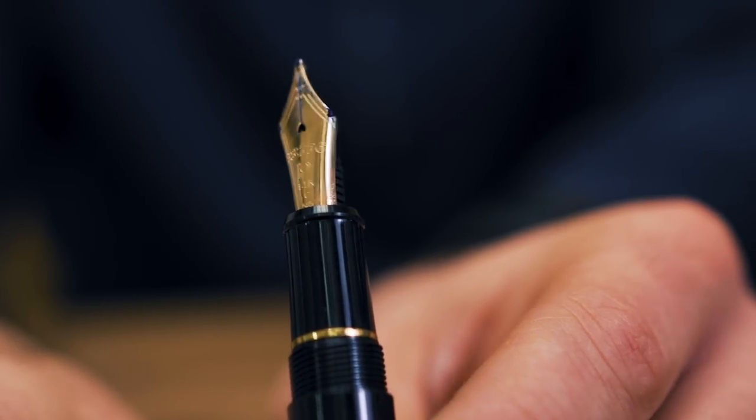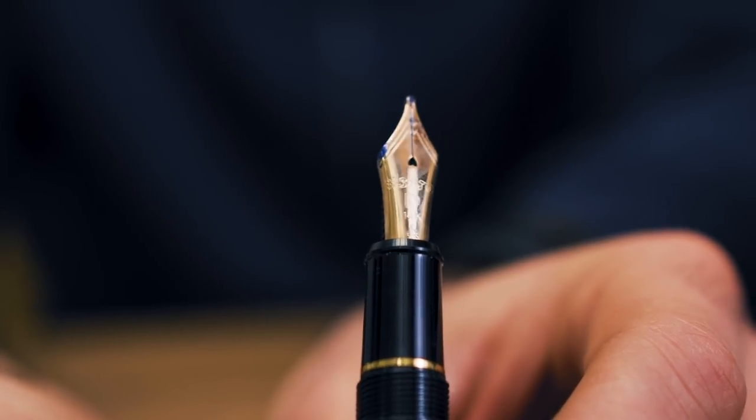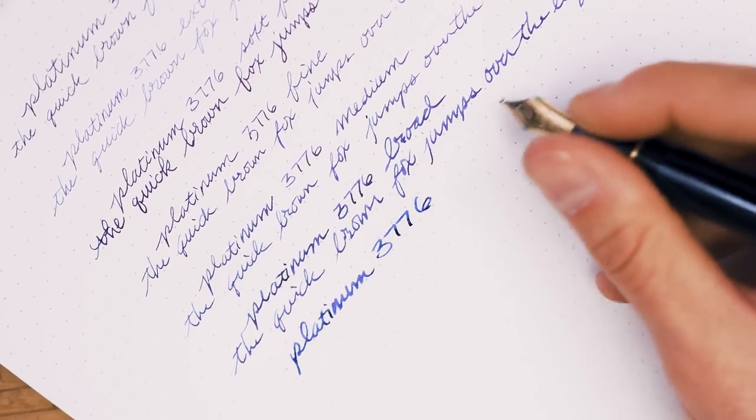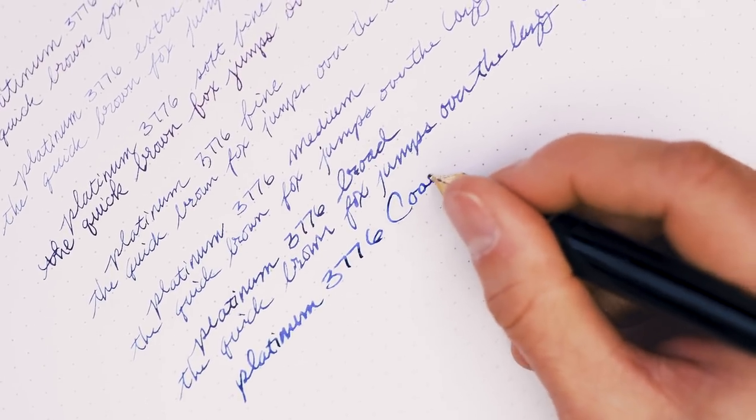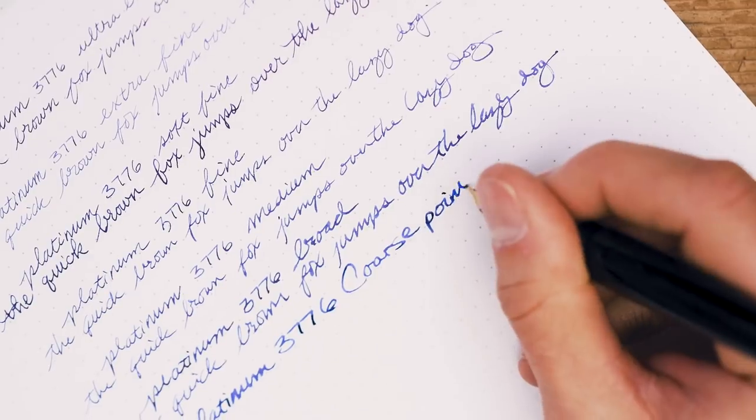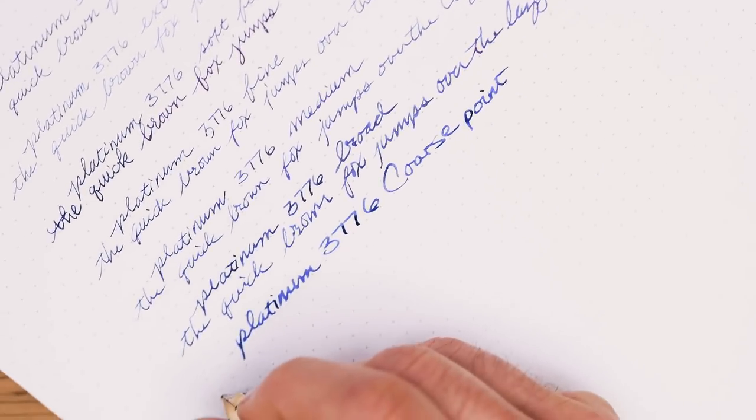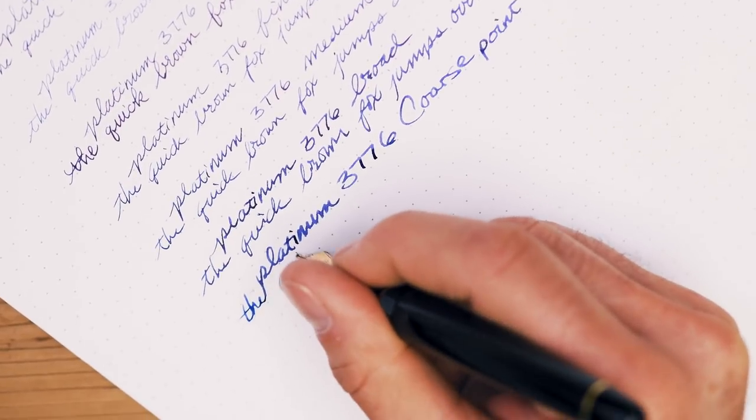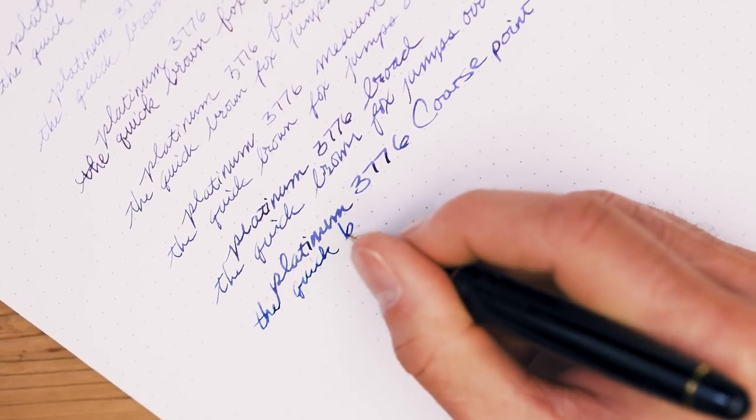Coarse, a.k.a. Double Broad: Despite the sound of its name, coarse is not a rough nib. Quite similar to the Sailor Zoom nib, the coarse lays down a thicker line the more acutely you hold the nib to the paper surface. A perpendicular angle to the page results in a line similar to the broad point, while a more acute angle will provide a wider line.